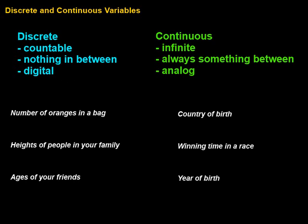Now let's take a look at continuous variables. Continuous variables are infinite and there's always something in between them. For example, if we're talking about time again, we have 10:42 and 10:43. There's actually 10:42 and one second, 10:42 and two seconds. But we could go in between there and say 10:42 and one and a half seconds, 10:42 and one and two thirds seconds, and so on. And there's always a value in between — that means continuous.